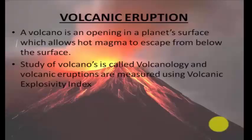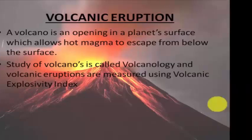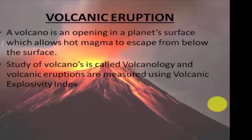Next is volcanic eruption. A volcanic eruption occurs when hot materials are thrown out of a volcano. A volcano is any opening in the earth's surface which allows hot magma to escape from below. The study of volcanoes is called volcanology. The materials that come out include lava, rock, dust, and gas compounds.